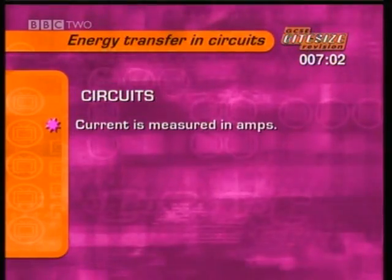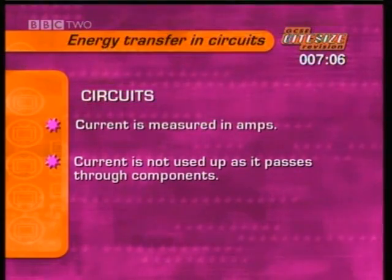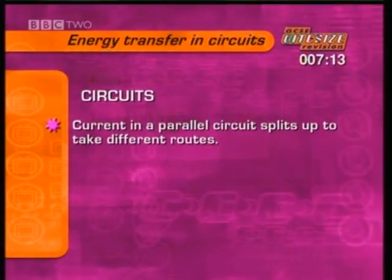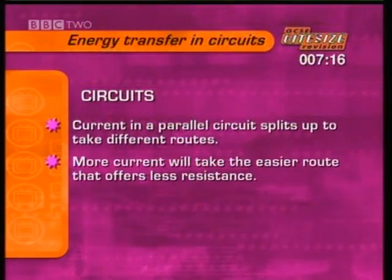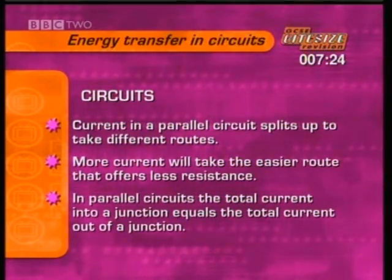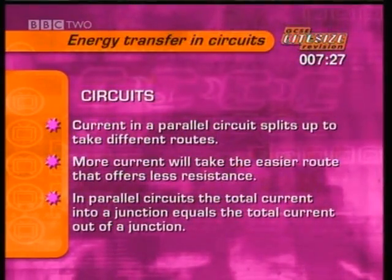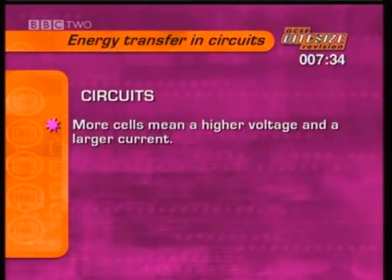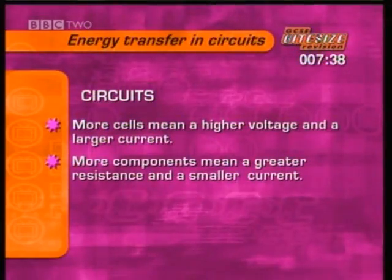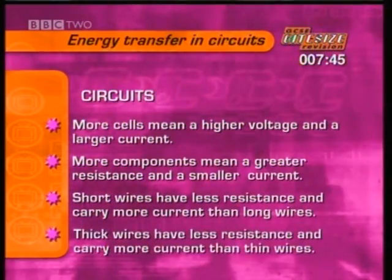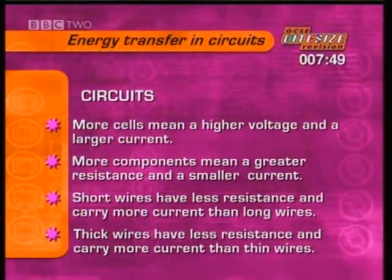To summarise energy transfer in circuits: current is measured in amps and it's not used up as it passes through components. The current in a series circuit is the same everywhere. The current in a parallel circuit splits up to take different routes — more current takes the easier route that offers less resistance. In parallel circuits, the total current into any junction equals the total current out of the same junction. More cells in a circuit mean a higher voltage and so a larger current. More components mean a greater resistance and so a smaller current. Short wires have less resistance and carry more current than long wires; thick wires have less resistance and carry more current than thin wires.